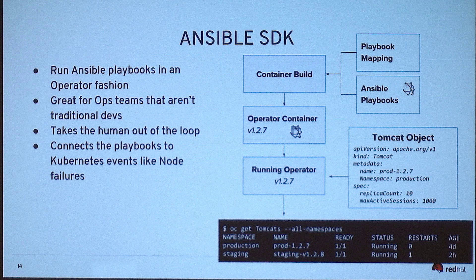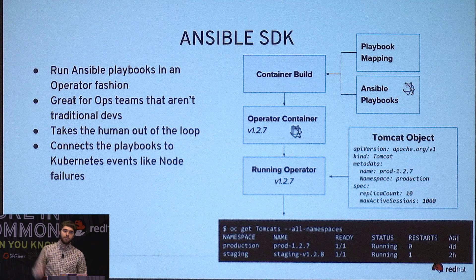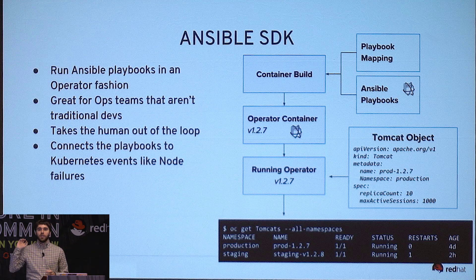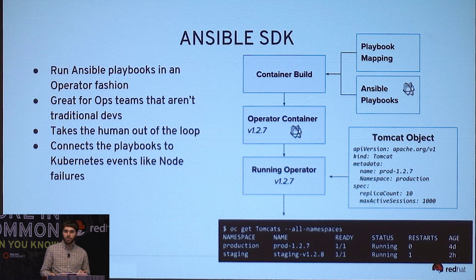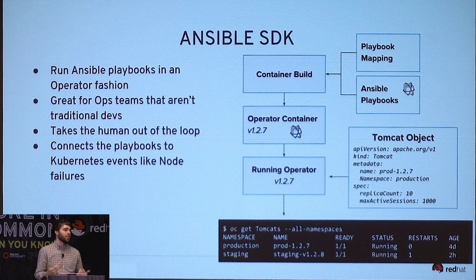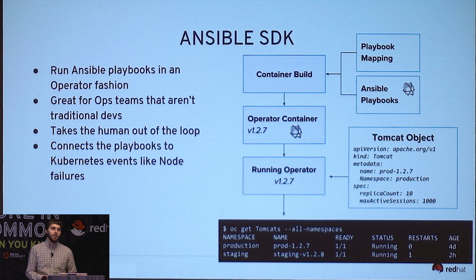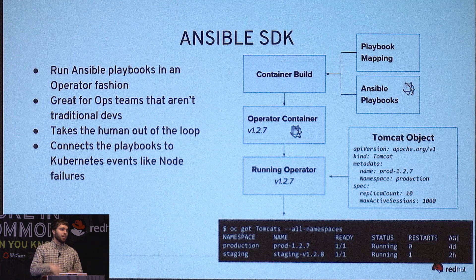Getting further toward level-five maturity, we have the Ansible SDK. It works the same way under the hood, except instead of a Helm chart you're passing in a set of playbooks and when to invoke them. This is really great for infrastructure teams that might not have traditional developer experience — they're not software engineers but they have automation already written for updating DNS records, draining load balancers, and interacting with Kubernetes directly. In playbooks you can actually tie those into the Kubernetes event model — so when a node fails, start running this playbook to fail over your application.